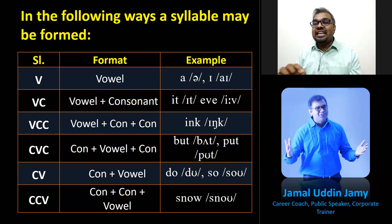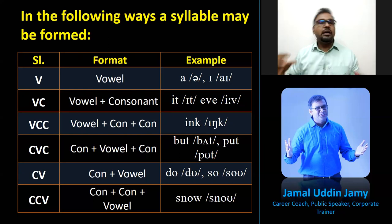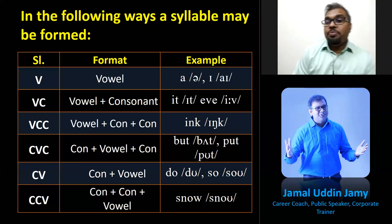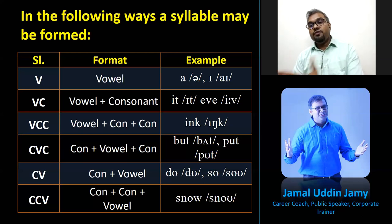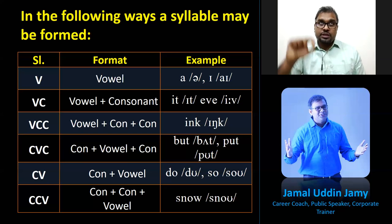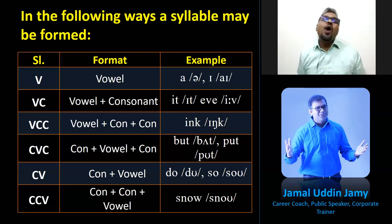Further patterns include consonant-vowel (CV), like 'do', 'go', 'know'. Then consonant-consonant-vowel (CCV), and consonant-vowel-consonant (CVC), like 'snow', 'slow', 'sleep', 'student'. So in six ways, a syllable can be formed.